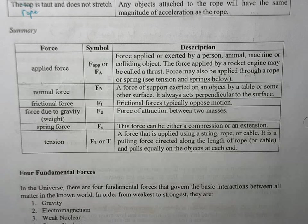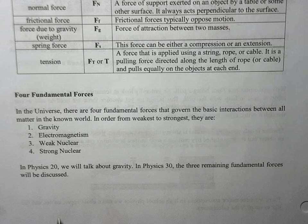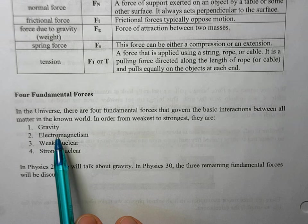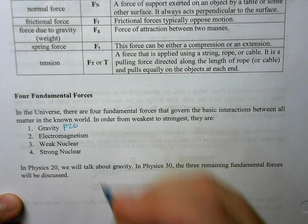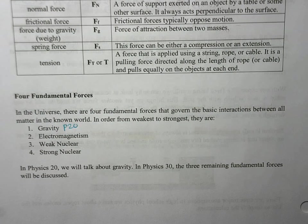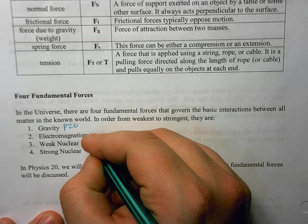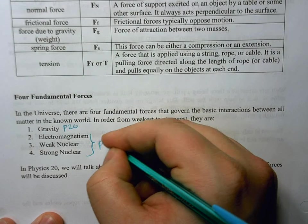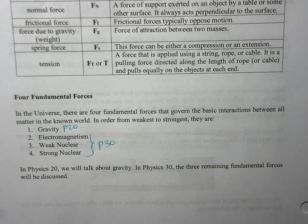We've just summarized our forces here, the six main forces we've looked at. To finish this off, all of our forces can be categorized into four categories - the four fundamental forces of the universe. We can order them from gravity, to electromagnetism, to weak nuclear, to strong nuclear. In physics 20, all we're going to talk about is gravity. We'll talk about some other forces, but the only fundamental force we're looking at in this course is the force due to gravity. Electromagnetism, weak nuclear, and strong nuclear - that is reserved for physics 30. If you want to learn more about those, stay tuned.